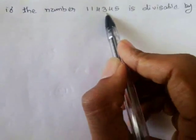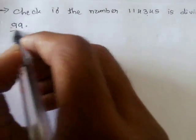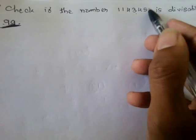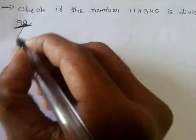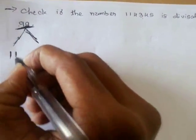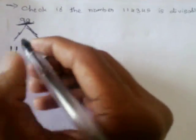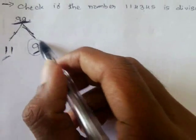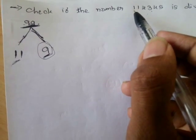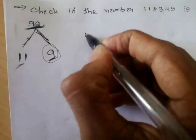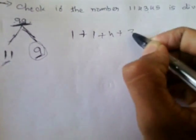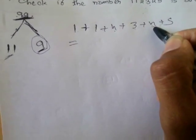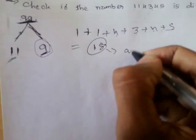The last example says: check if 114345 is divisible by 99. We find two co-prime factors of 99, which are 11 and 9. First, we check divisibility by 9: the sum of digits 1 plus 1 plus 4 plus 3 plus 4 plus 5 gives us 18, and 18 is divisible by 9.